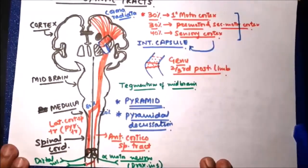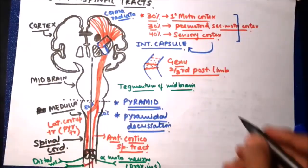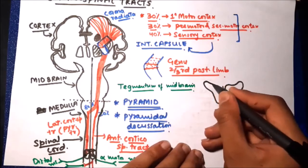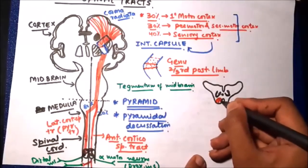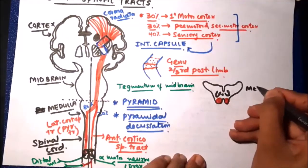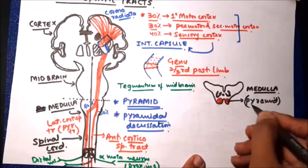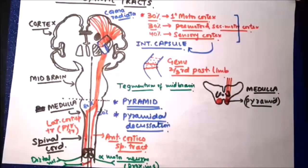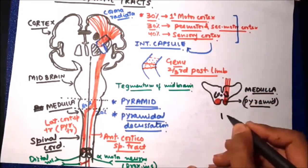Their function is the fine control of movements as well as maintenance of tone and posture. To better understand these fibers in the midbrain and medulla region, let us look at a cross-section of the medulla at the level of the pyramids. In this section, with the olivary nucleus visible, the structures formed by the corticospinal tract fibers are the two pyramids — one on each side.